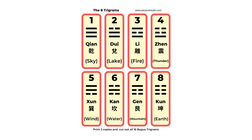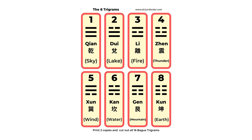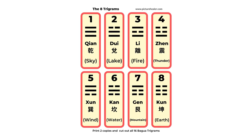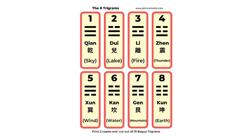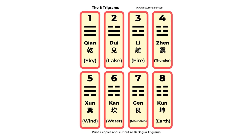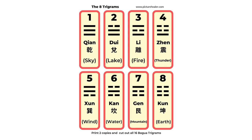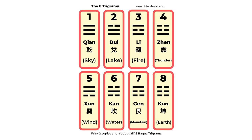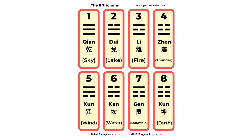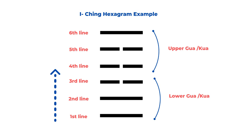Instead of throwing coins, you can use these cards. You can print out two copies and cut out all of them, so you will have two of the Qian Gua, two of the Dui Gua, and two of everyone — totally 16 cards. We want two of each because we have an upper Gua and a lower Gua, and we need two symbols to make one Yi Jing hexagram, so we want the chance of picking up two of the same cards.